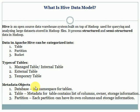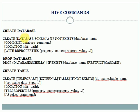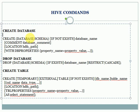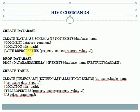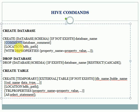Now let's start with sample commands for creating a database. The syntax is: CREATE is a keyword and you can specify DATABASE or SCHEMA — both are the same. IF NOT EXISTS means if a database with that name does not already exist it will be created; if it exists the command will fail. You can also provide COMMENT for the database, LOCATION to specify the HDFS path, and WITH DBPROPERTIES to specify a list of properties.